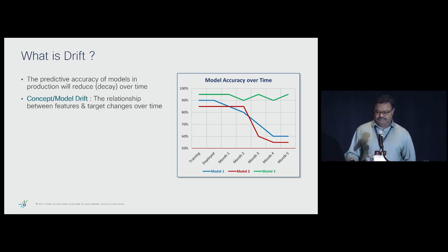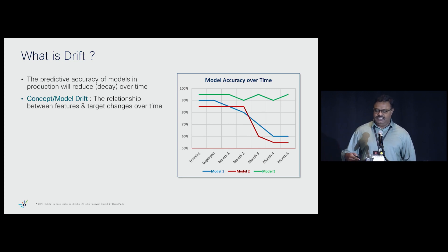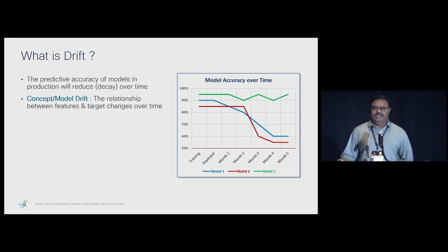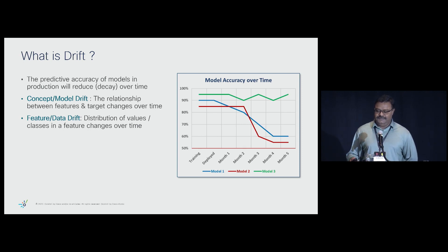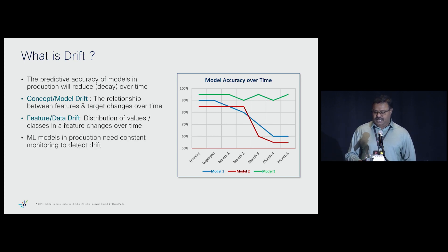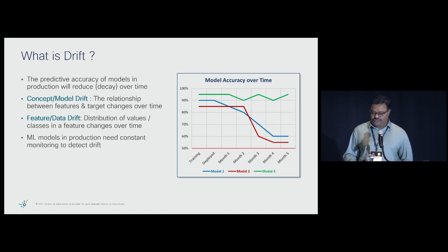Concept drift is when the relationship between the features and the target changes over time. A machine learning model is built on the premise that a relationship exists between features and target, and if that relationship changes, the model is not going to perform as desired. Feature or data drift looks at the data and features to see if there are changes in the distribution of incoming data, errors, and similar issues. ML models in production need constant monitoring for both types of drift, especially concept drift.